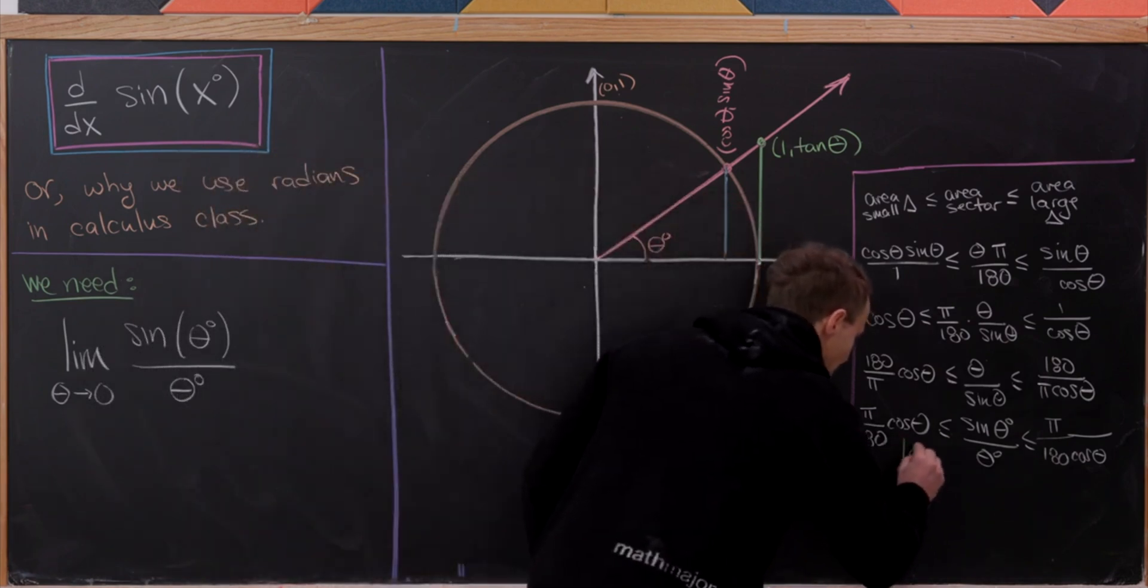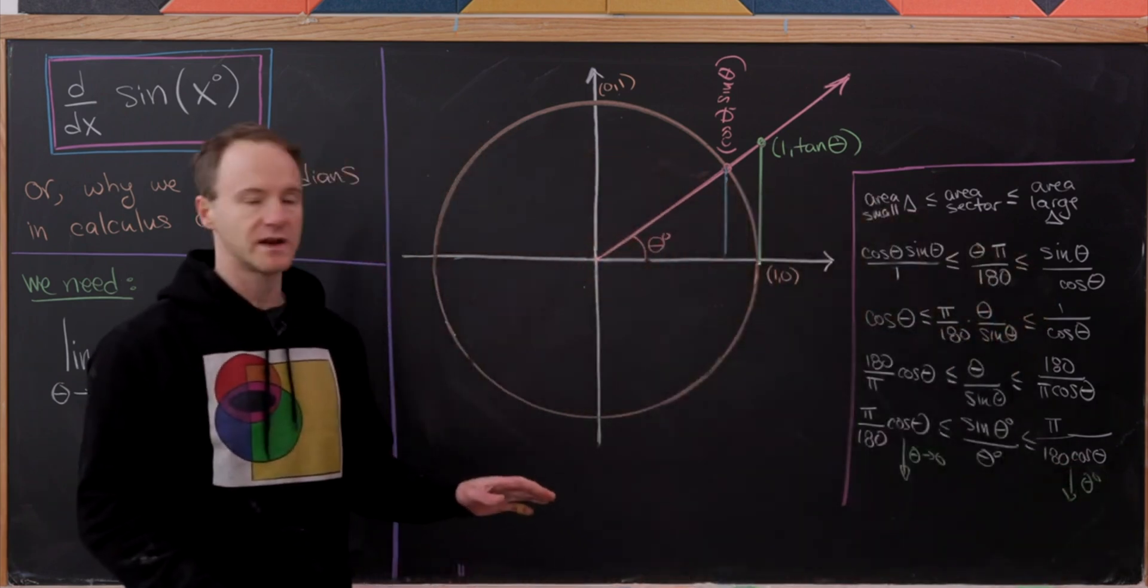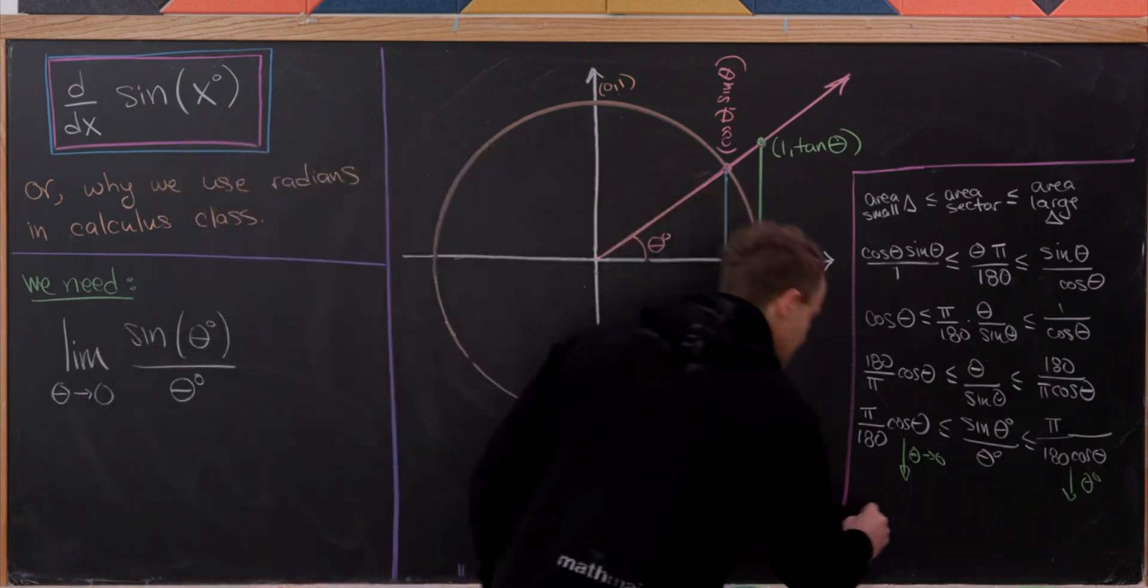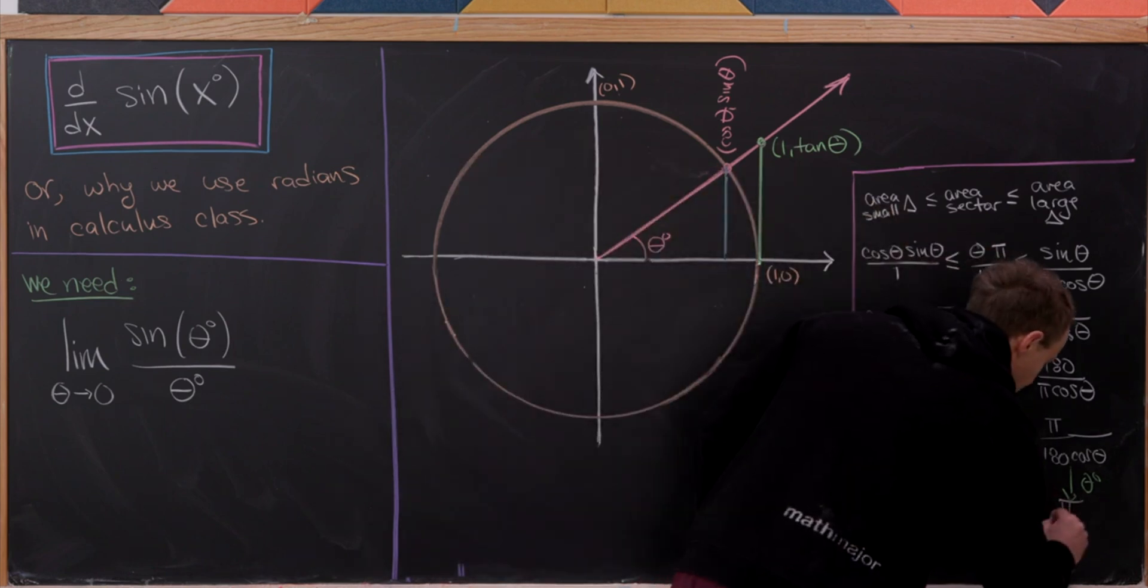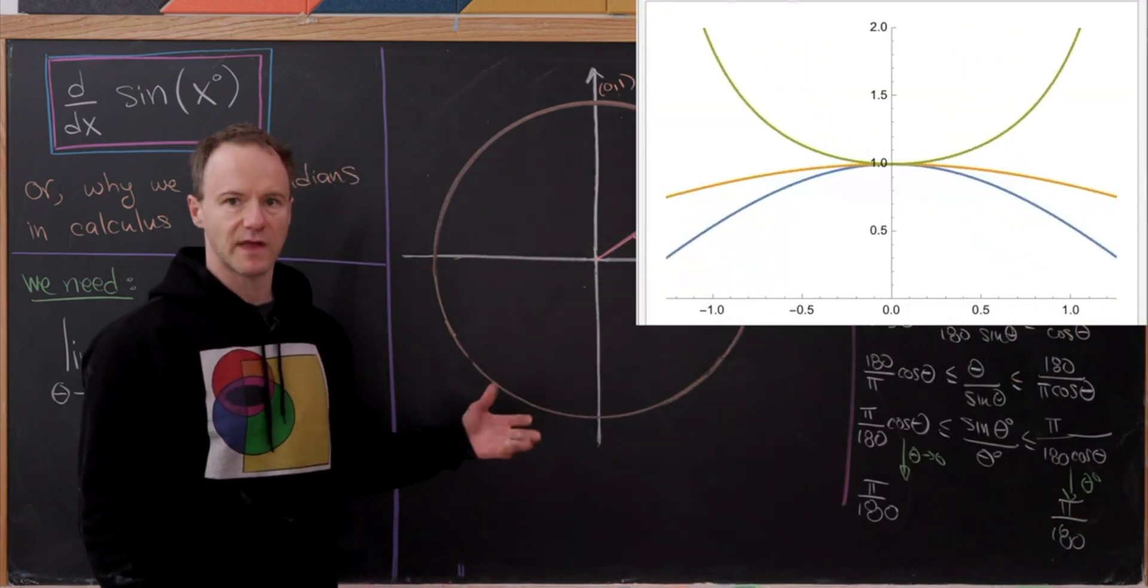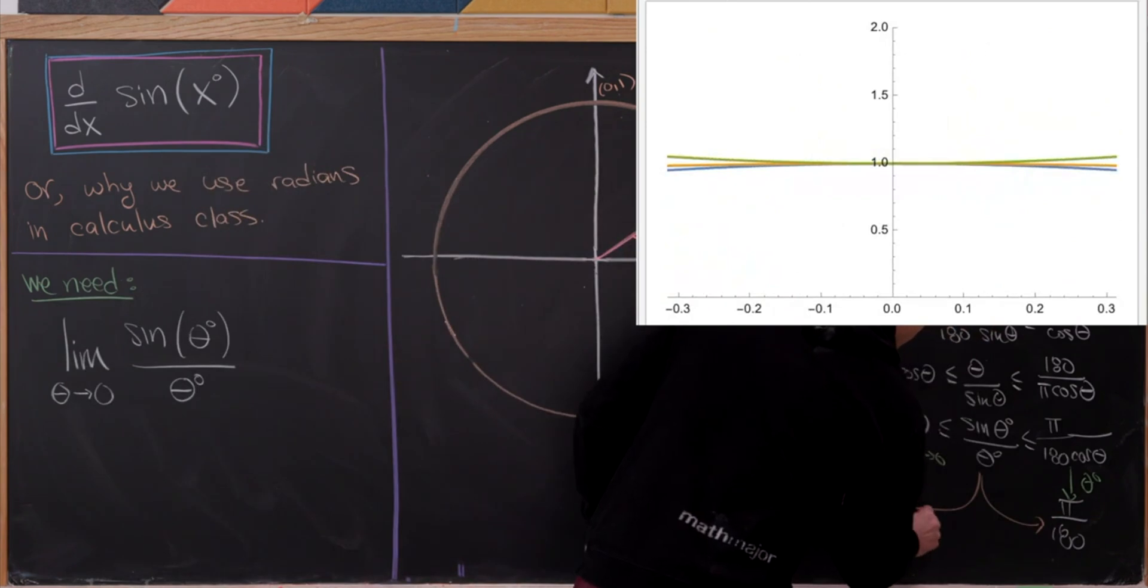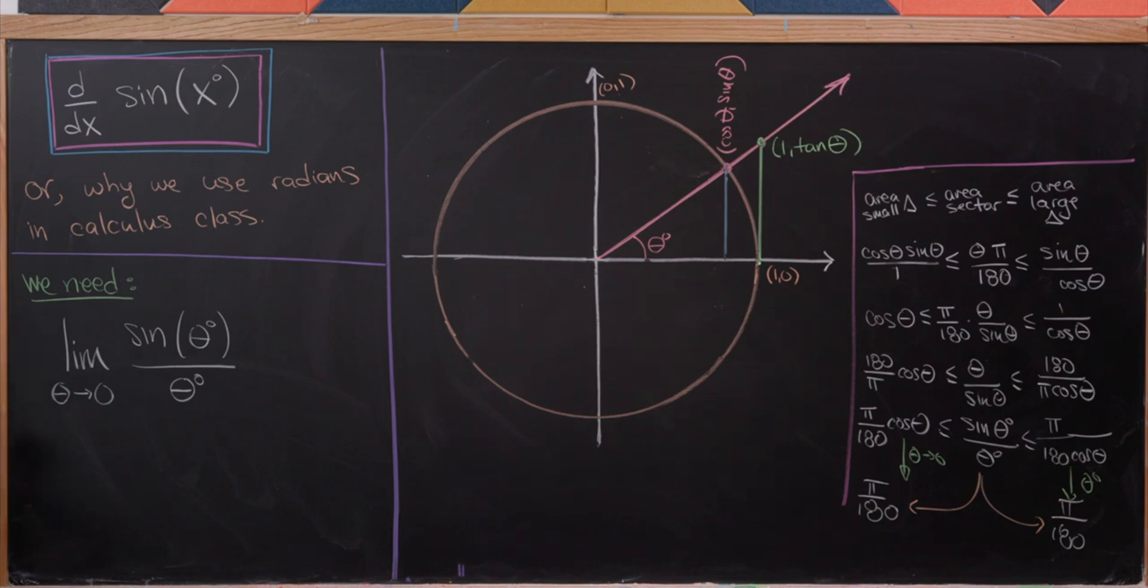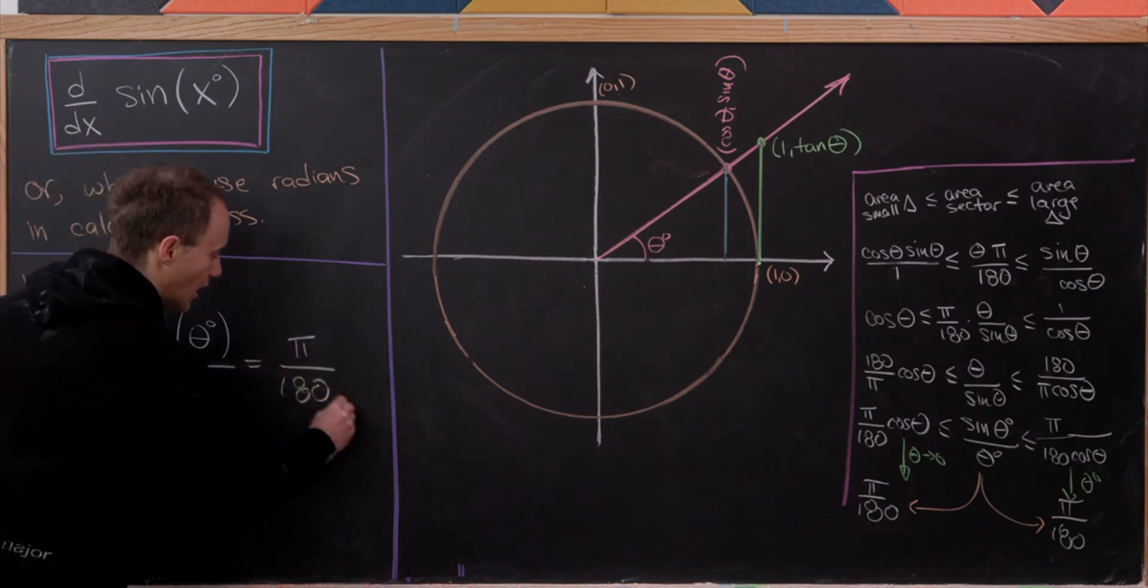And observe that as theta goes to 0, on the ends we end up with pi over 180 times cosine of 0. But it's well known that cosine of 0 is 1. So we get pi over 180 on this left and we get pi over 180 on this right. But then by the squeeze theorem, that must be what the limit of the middle term is as well. So that means we've got our tool over here: the limit as theta goes to 0 of sine of theta degrees over theta degrees is pi over 180.